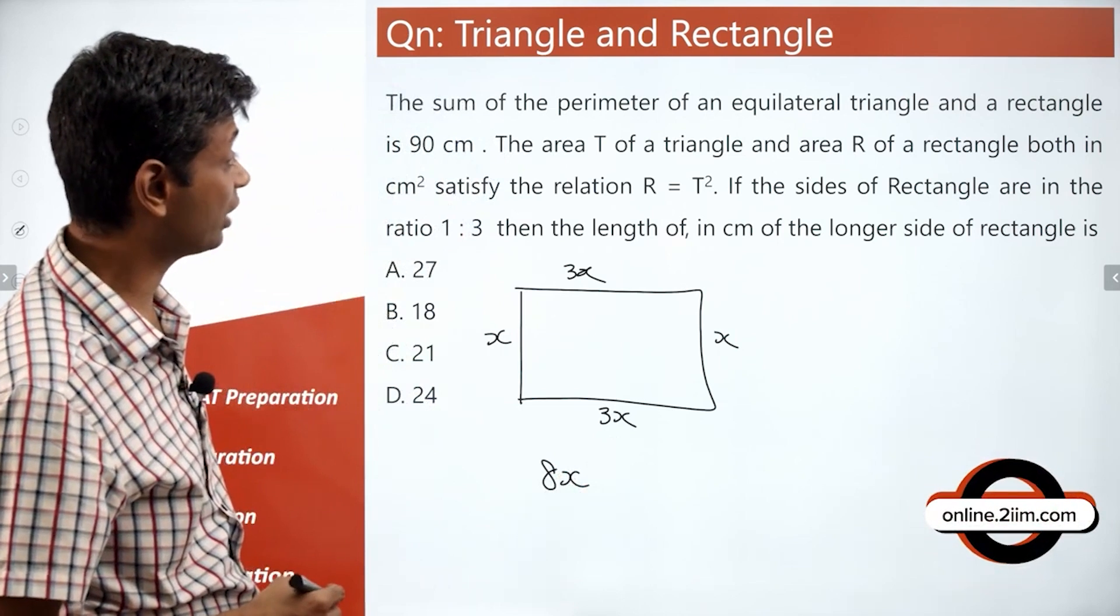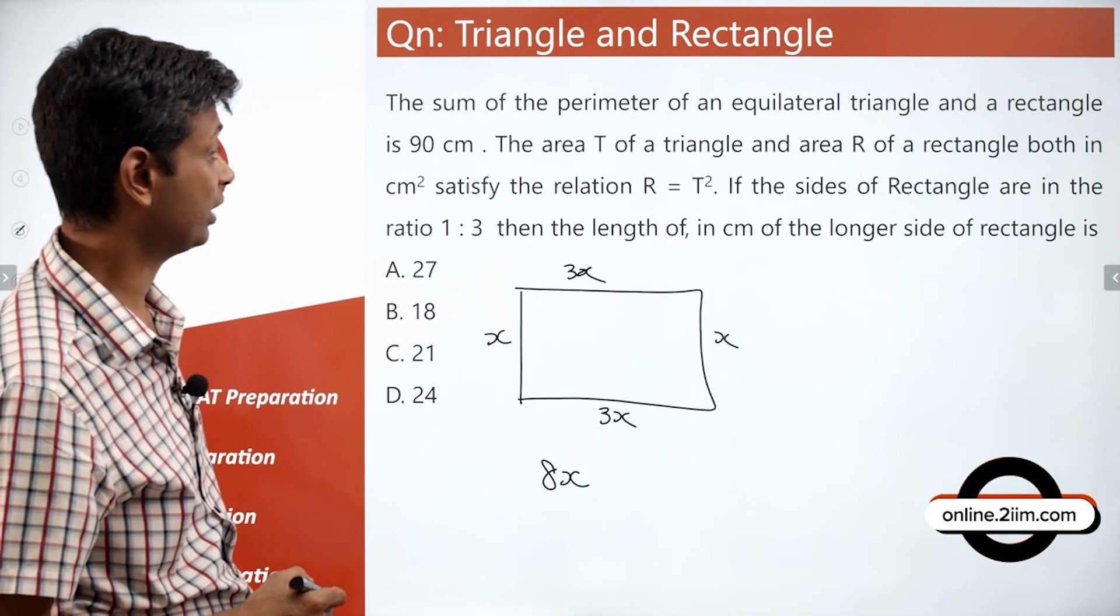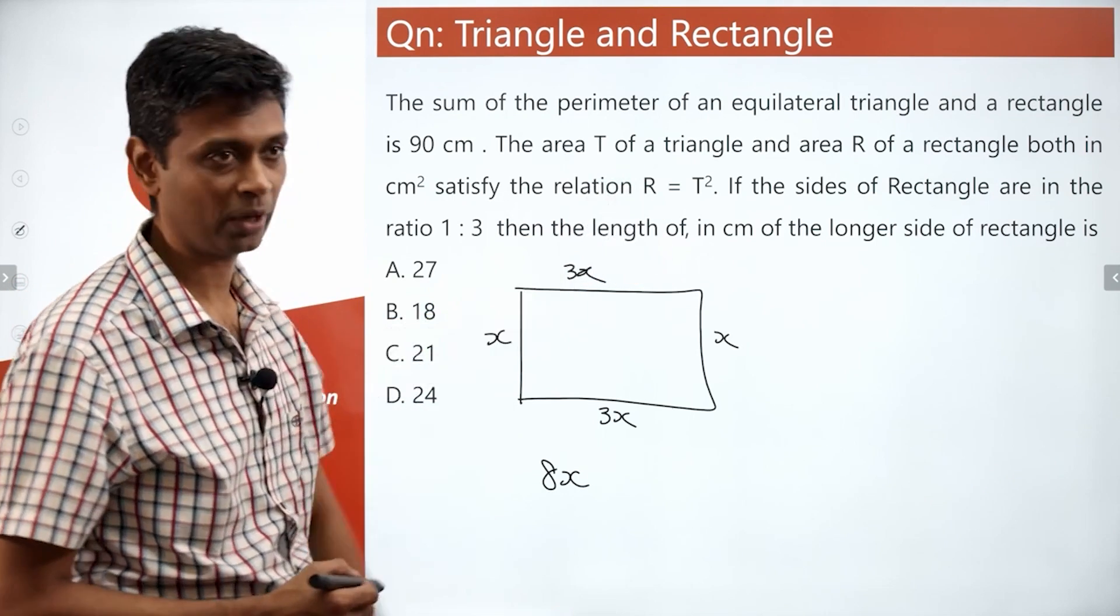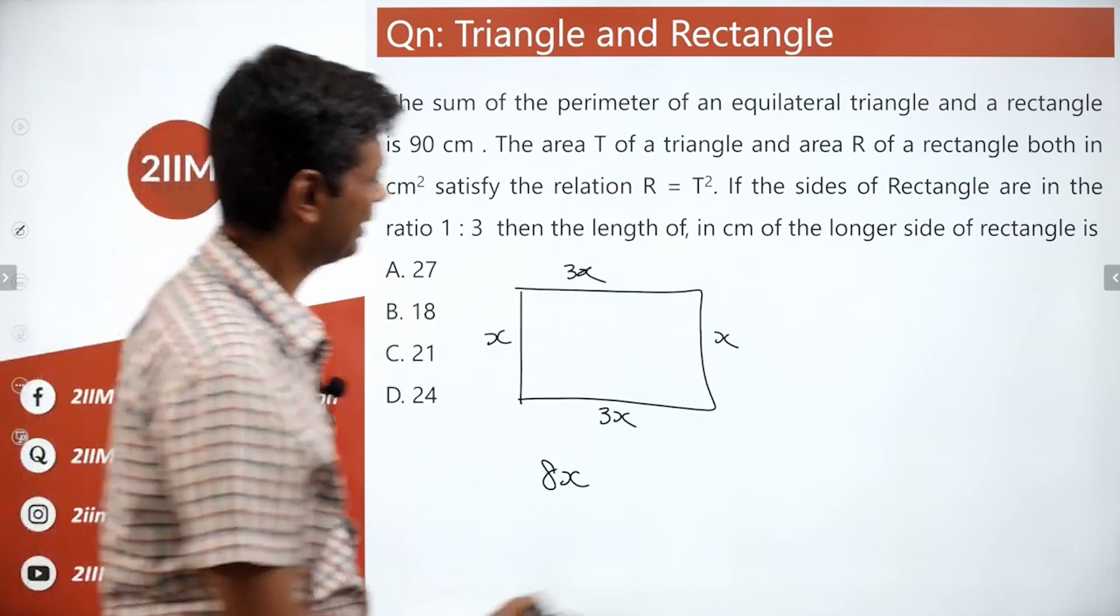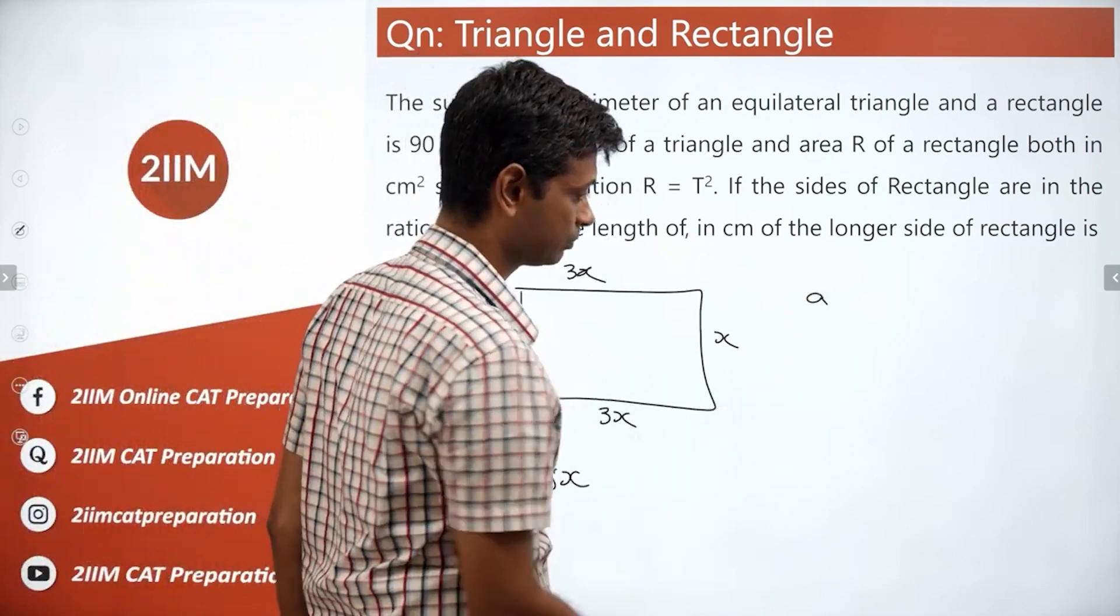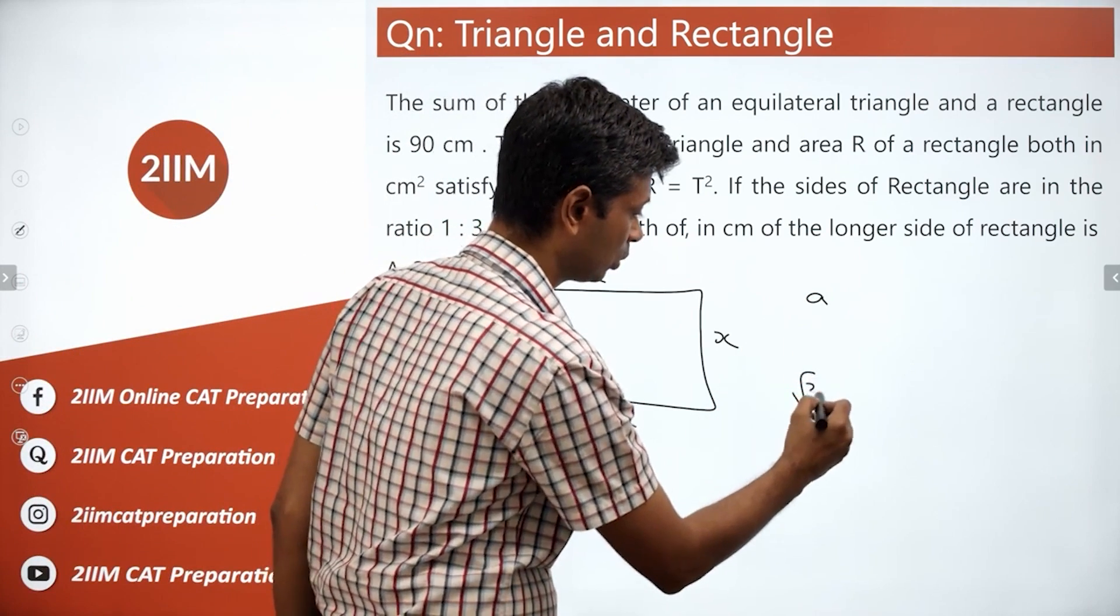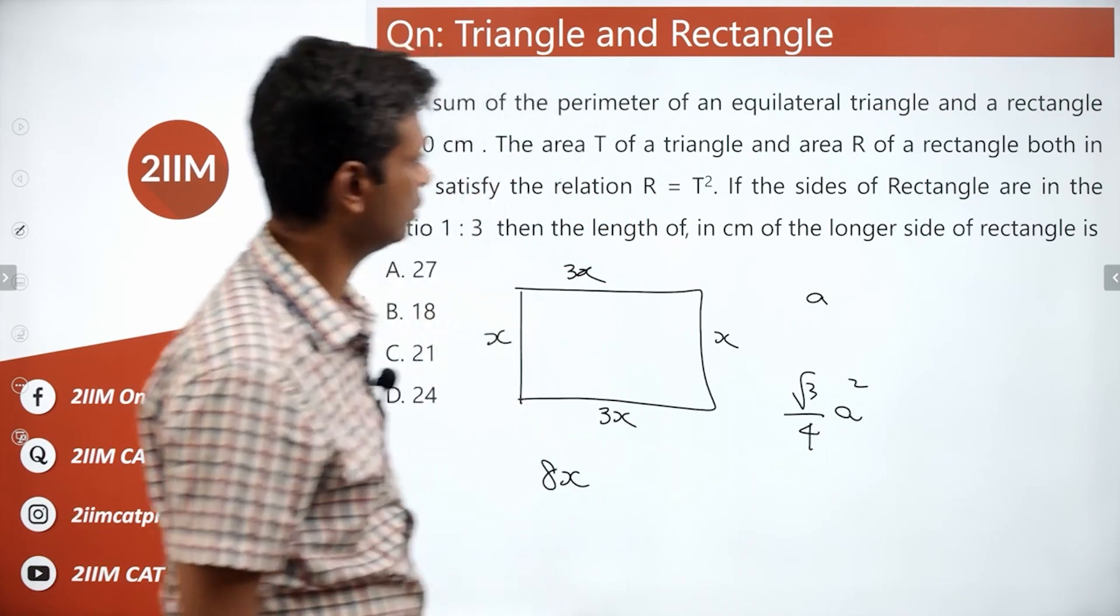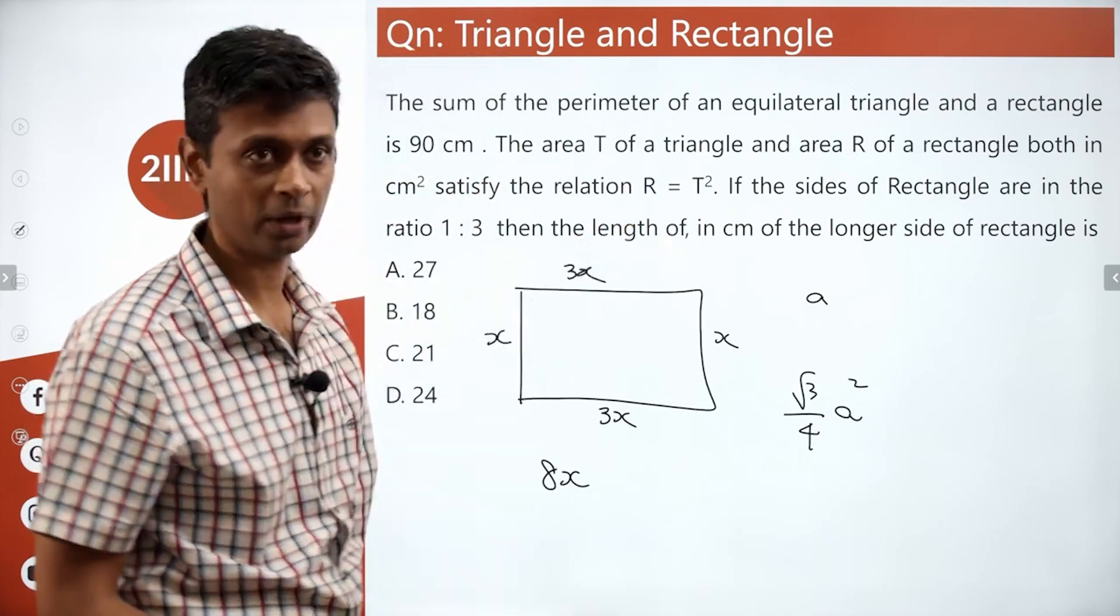The area T of the triangle and area R of a rectangle both in centimeter square satisfy the relation R equals T square. First of all, let's say side of the equilateral triangle is A. Then area would be root 3 by 4 A square. So, R equals T square.